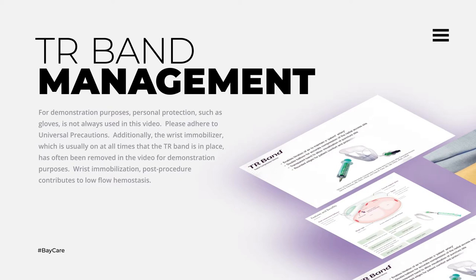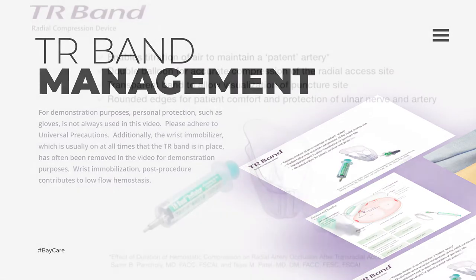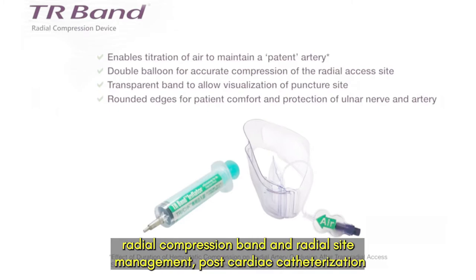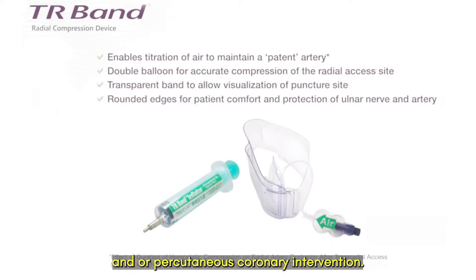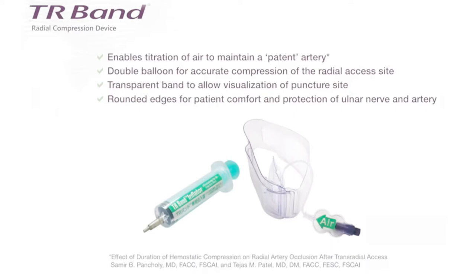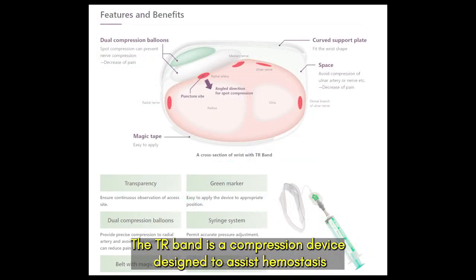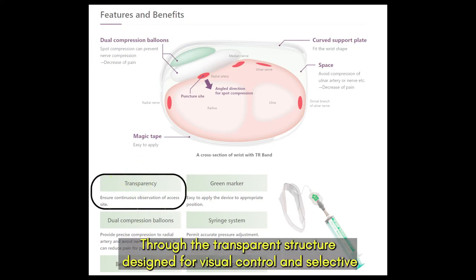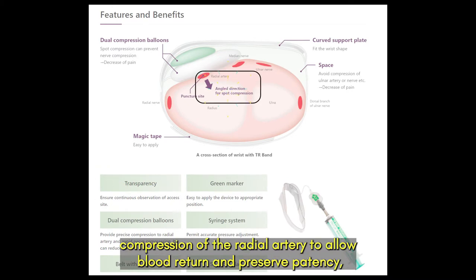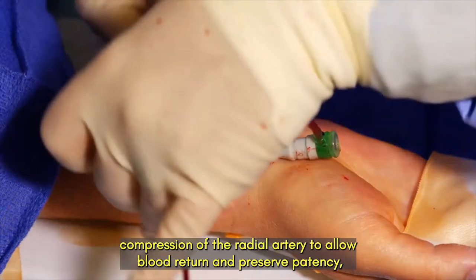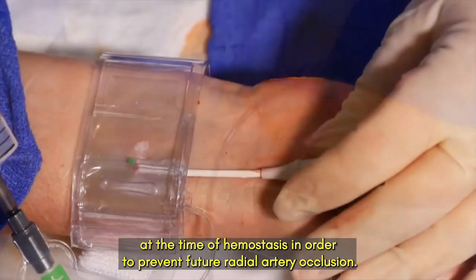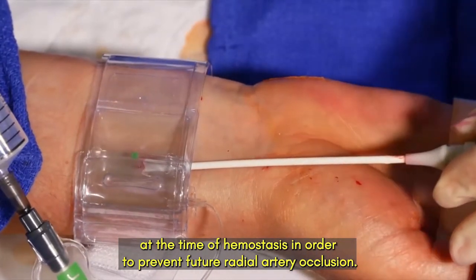Wrist immobilization post-procedure contributes to low-flow hemostasis. In this video, we will discuss the process for removal of the TR radial compression band and radial site management post-cardiac catheterization and/or percutaneous coronary intervention. The TR band is a compression device designed to assist hemostasis of the radial artery after a trans-radial procedure, through a transparent structure designed for visual control and selective compression of the radial artery to allow blood return and preserve patency. The TR band assists in maintaining radial artery patency at the time of hemostasis in order to prevent future radial artery occlusion.